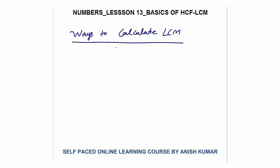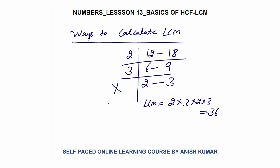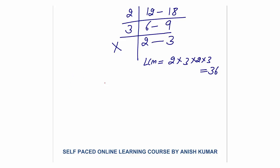There is one method we learned in school. For example, for 12 and 18, we divide by common factors and multiply them — 2 into 3 into 2 into 3 gives LCM as 36. But this is a lengthy method so we won't use it. The methods we will use are: the prime factorization method, and a logical method that we will use most.